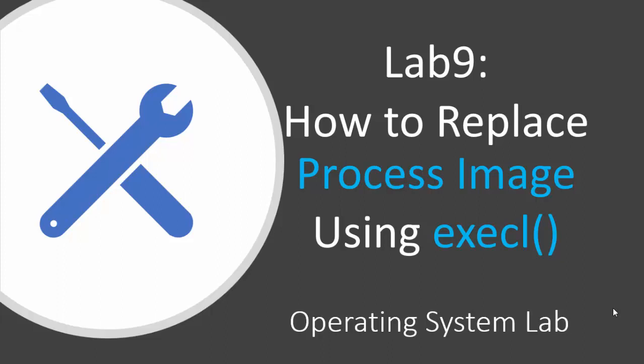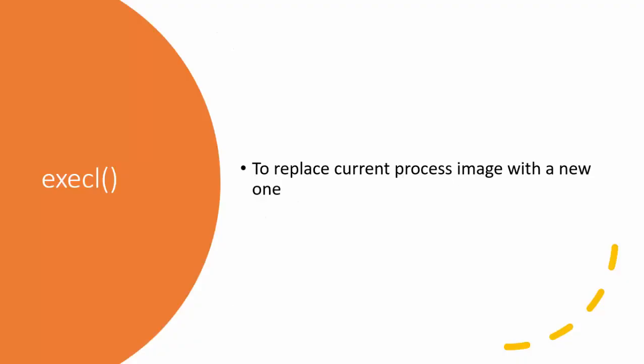Hello everyone, welcome back to this new tutorial on how to replace a process image using the execl function. The execl function is used whenever you want to replace the current image of a process with a new one.